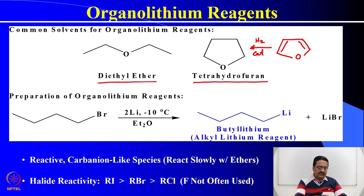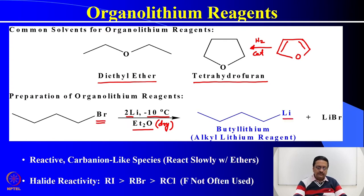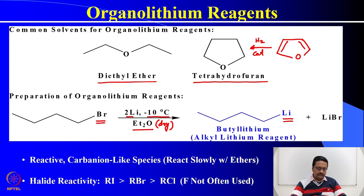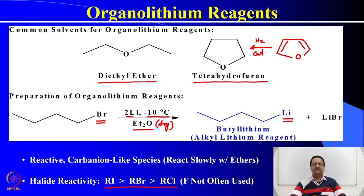The reactivity of halides follows the usual order: iodides are more reactive than bromides, and bromides more reactive than chlorides. Alkyl fluorides are generally not used because the carbon-fluorine bond is very strong and cannot be broken easily at minus 10°C.